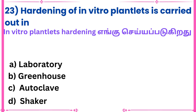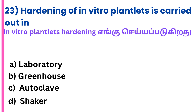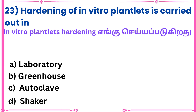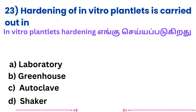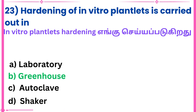Question 23: Hardening of in vitro plantlets is carried out in which environment? Answer: Green house.